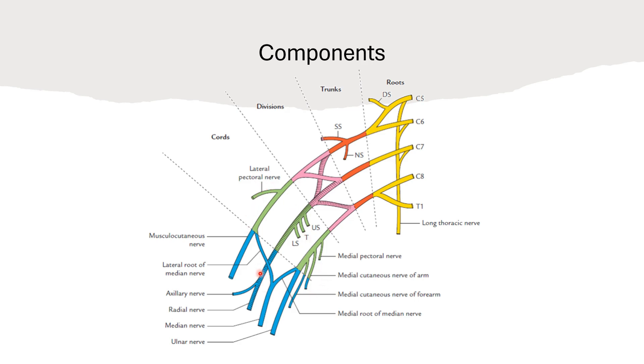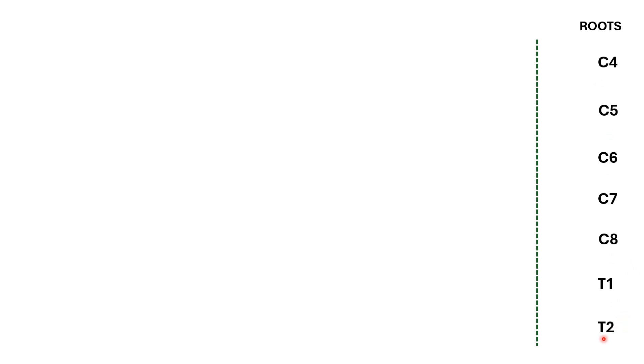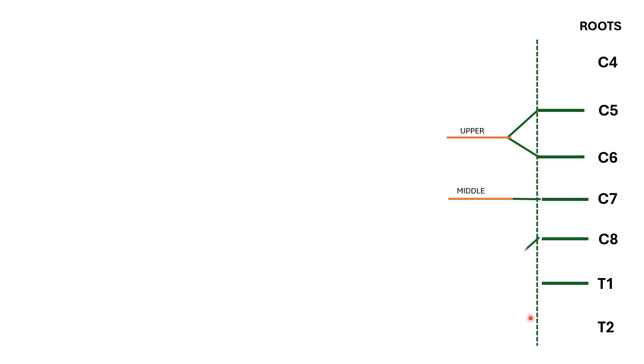Now let's break down the brachial plexus step by step. First are the roots: the ventral rami of C5, C6, C7, C8 and T1 contribute to the formation of the brachial plexus. When it receives a contribution from C4, we call it a prefixed brachial plexus; from T2, a postfixed brachial plexus. From the roots we have the trunks. The ventral rami of C5 and C6 join to form the upper trunk; C7 continues as the middle trunk; and C8 and T1 join to form the lower trunk.